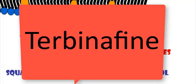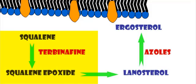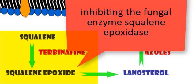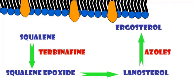Terbinafine is a synthetic allylamine and is orally active. It interferes with ergosterol biosynthesis by inhibiting the fungal enzyme squalene epoxidase. Acting as a structural analog of squalene, terbinafine causes the accumulation of this unsaturated hydrocarbon and a decrease in ergosterol in the fungal cell membrane. The accumulation of toxic amounts of squalene results in the death of the fungal cell.